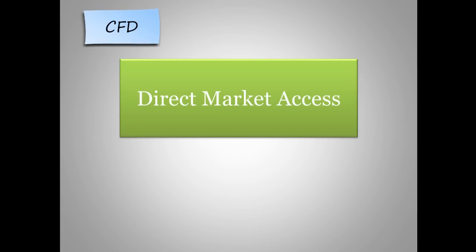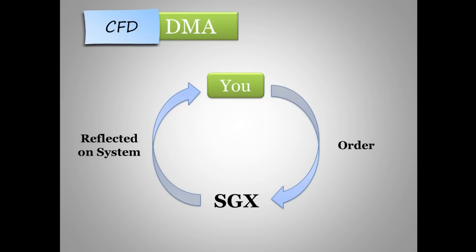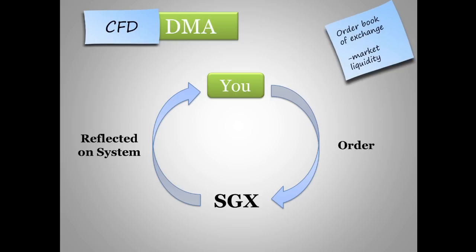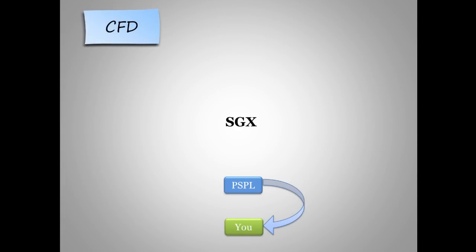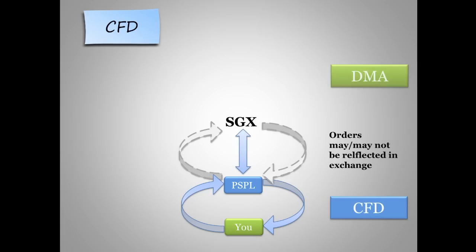Now these properties are similar to CFD DMA as well. So what is the difference? The main differential factor is direct market access. In essence, direct market access allows you to participate in the market directly. You will be participating in the order book of the exchange, giving you direct access to the liquidity of the market. In contrast to a normal CFD account where orders are submitted and executed via Philips Securities' hedging desk, this account does not go through that route and will be directly reflected on the exchange — whenever you place an order, it is directly executed on the exchange.